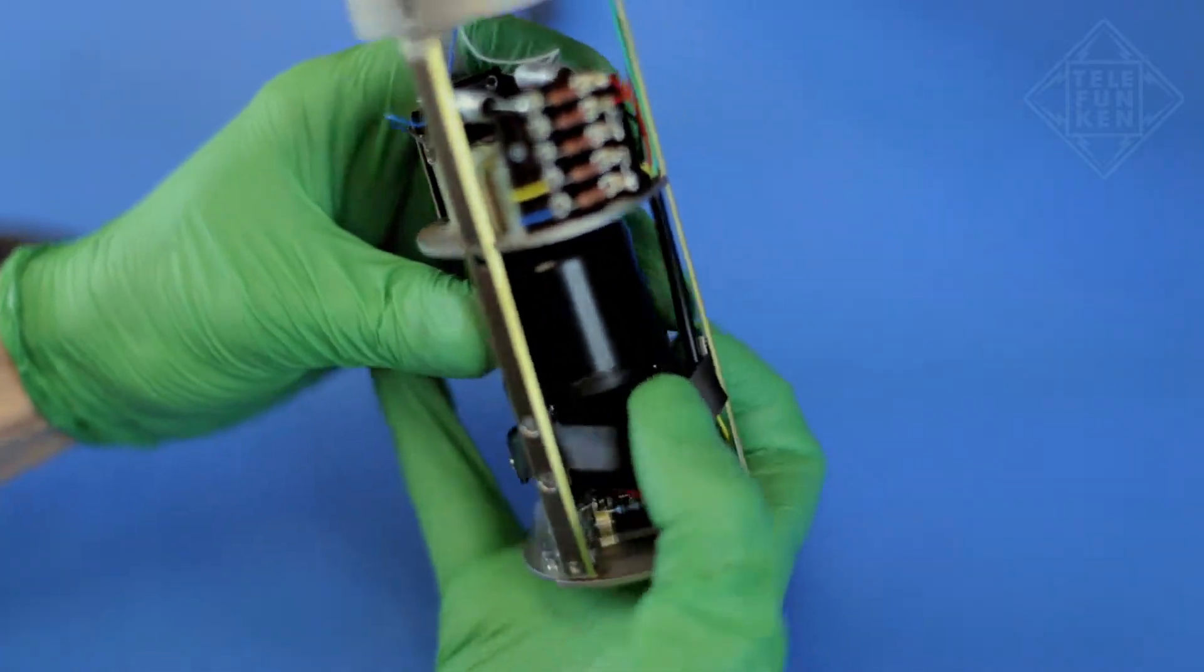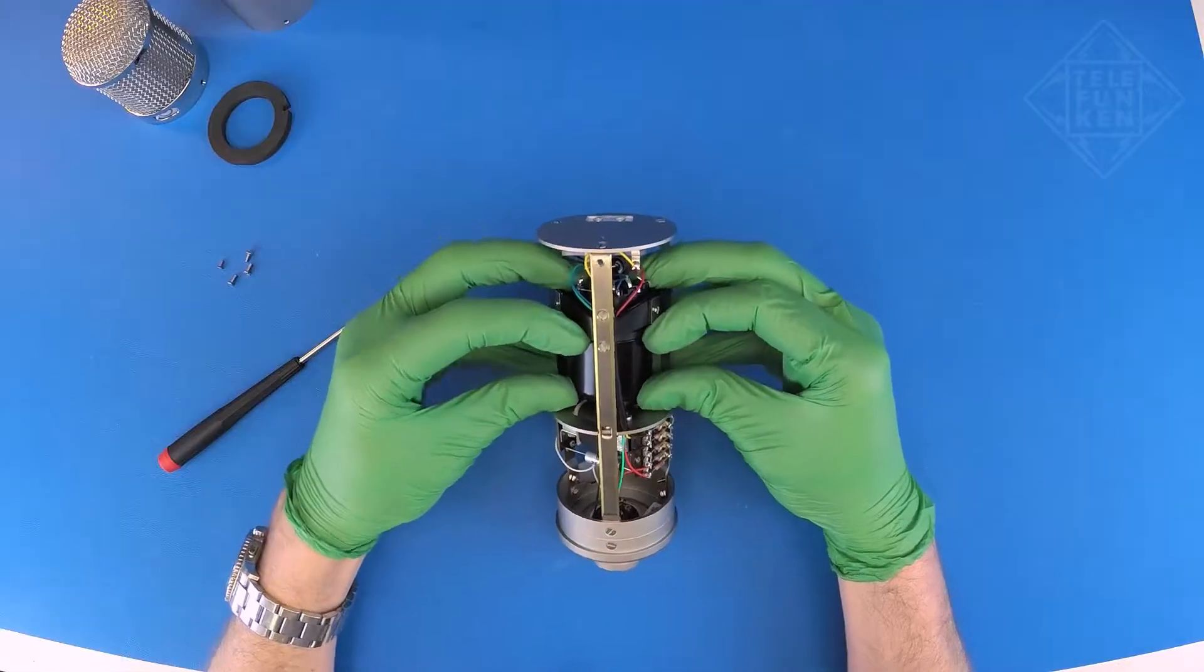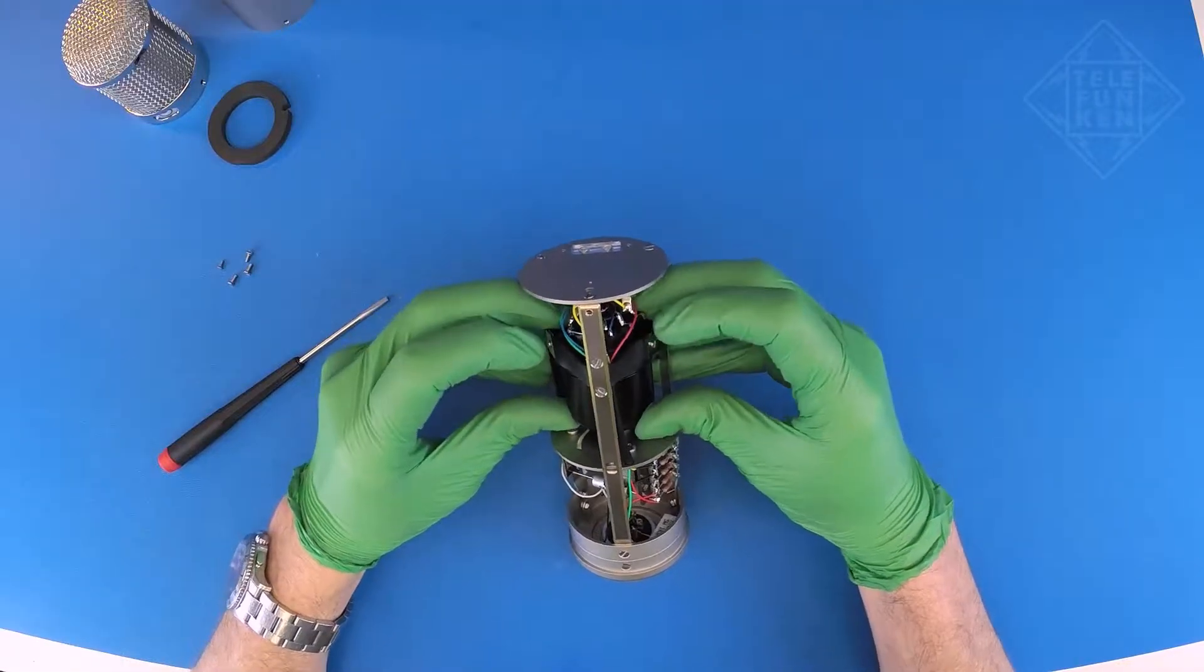With the pins aligned to the socket holes, use your thumb to push the tube into the socket while pressing down on the socket with your other fingers.